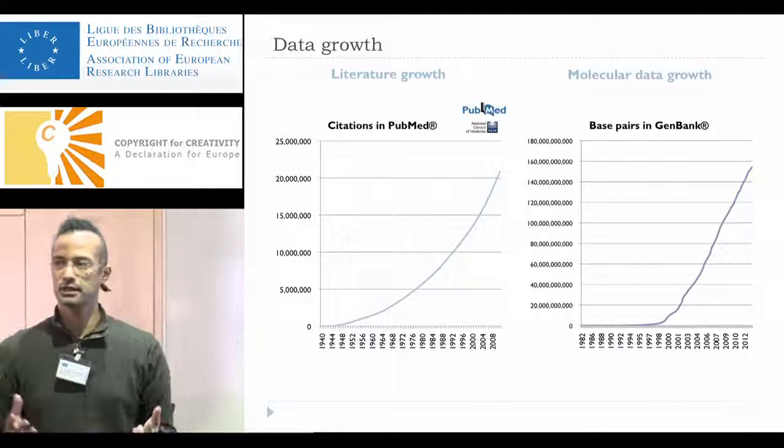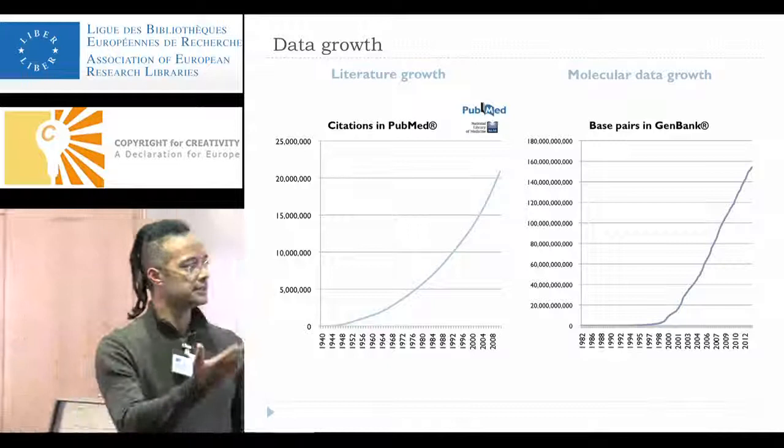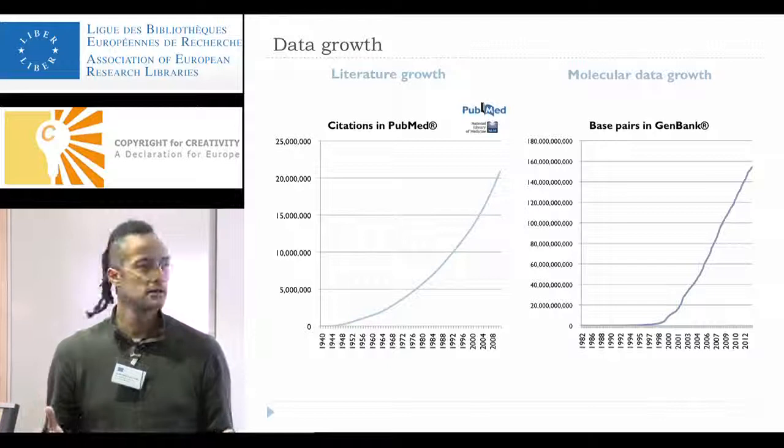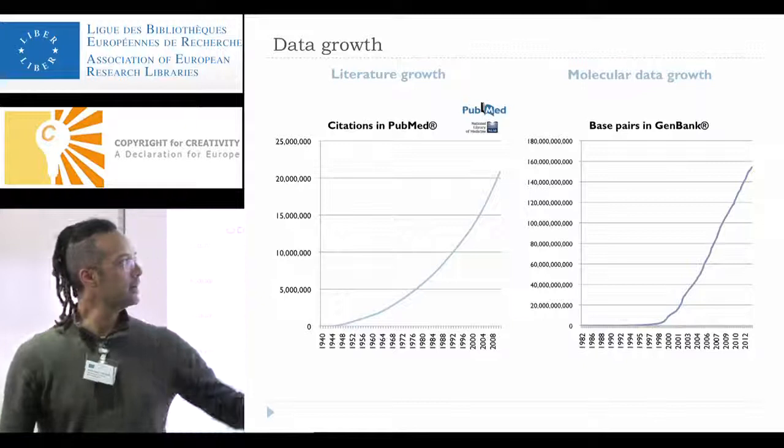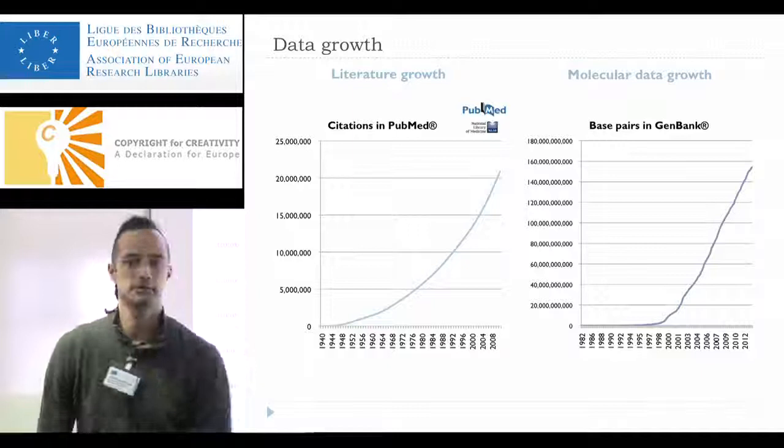At the same time, this is just one example of a molecular database — a DNA sequence database, a gene bank. This shows the growth of content in nucleotides or base pairs, and we are talking about billions of nucleotides: 160 billion. So we have to make sense of that, and it's impossible for one mind. We need computers, of course.